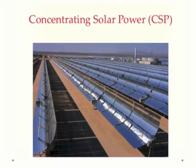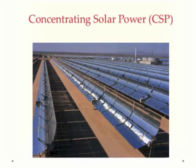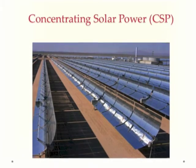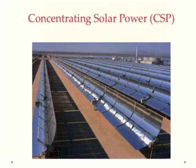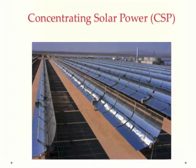There is a second technology that can use sunlight to produce electricity, called concentrating solar power. This does not use PV cells. Instead, it's a thermal mechanism that uses mirrors to focus sunlight to produce high temperatures, and we'll see how this works in some detail.